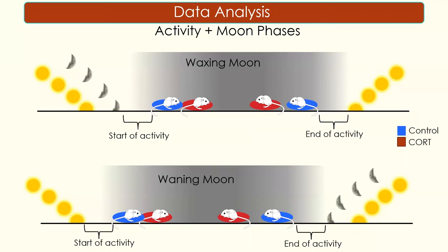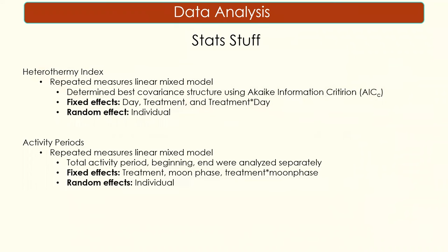I considered the start of activity when animals reached their modal active body temperature after complete darkness, and the end of activity when animals cooled down past their modal active body temperature before sunrise. For the heterothermia index I used a repeated measures linear mixed model, with day, treatment, and a treatment-by-day interaction as fixed effects and individual as a random effect. For activity periods, I analyzed total activity per night and the beginning and end as separate models, using treatment, moon phase, and a treatment-by-moon-phase interaction as fixed effects.